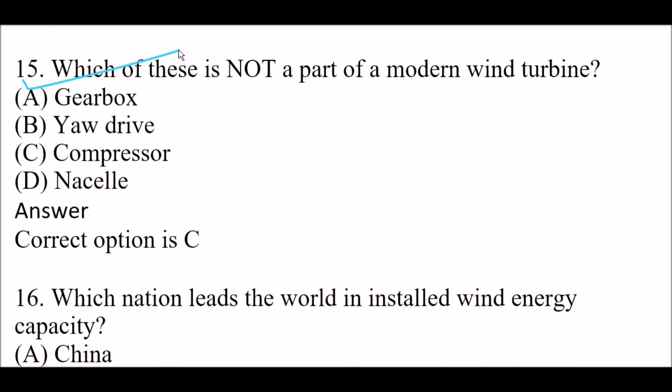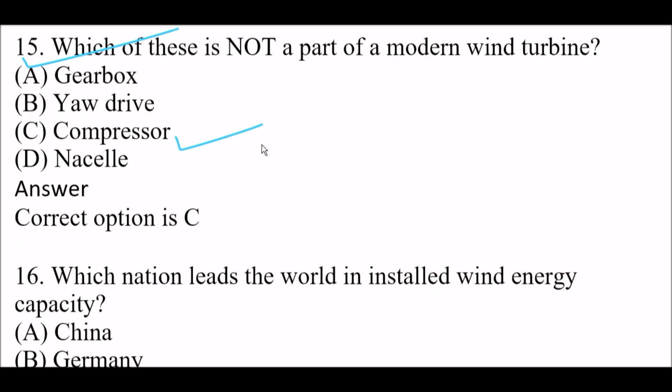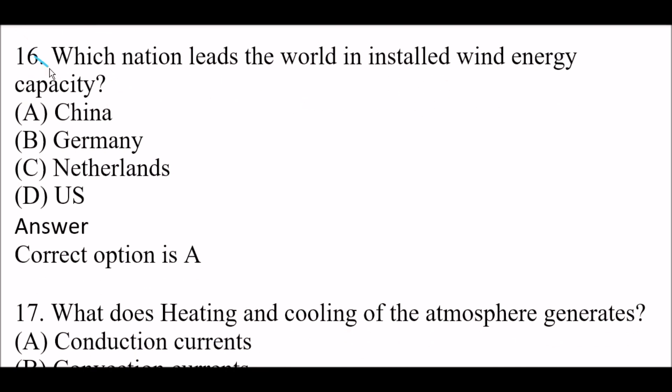Next question: which of these is not a part of a modern wind turbine? Option A: gearbox. Option B: yaw drive. Option C: compressor. Option D: nacelle. Right answer is Option C — compressor is not a part of a modern wind turbine. Next question: which nation leads the world in installed wind energy capacity? Option A: China. Option B: Germany. Option C: Netherlands. Option D: US. Right answer is Option A — China leads the world in installed wind energy capacity.